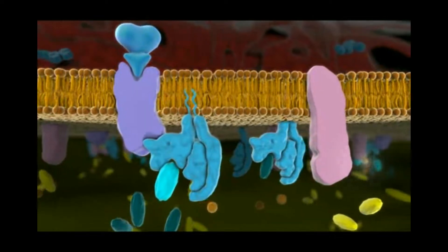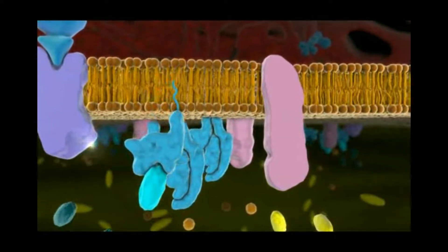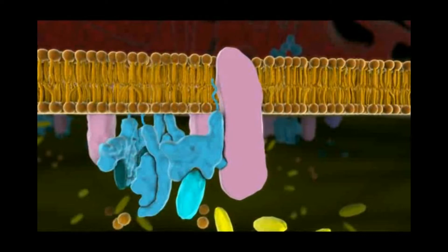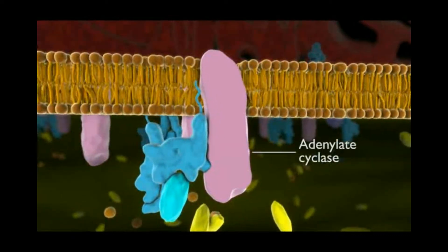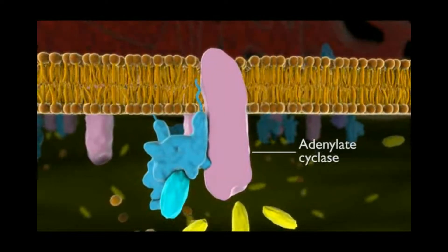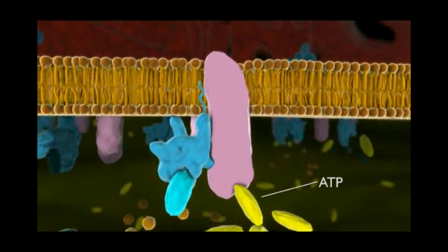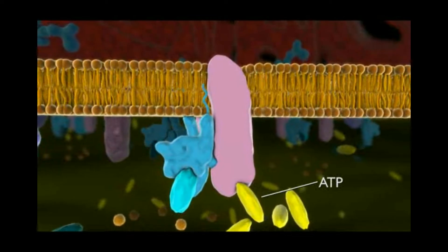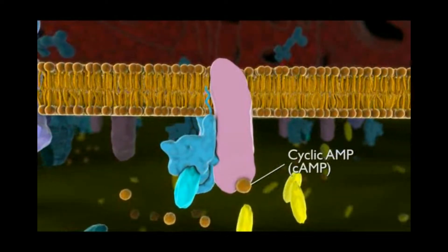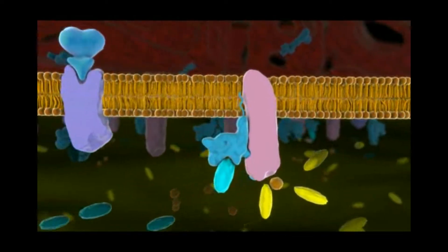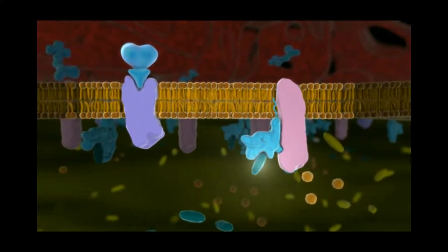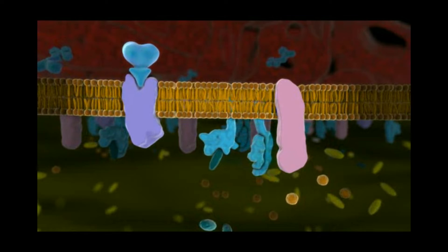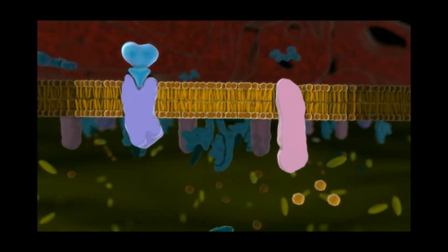An activated G protein diffuses along the plasma membrane until it binds to and activates the enzyme adenylate cyclase. Once active, adenylate cyclase converts ATP to the second messenger, cyclic AMP. These many molecules of cyclic AMP from each activated cyclase enzyme represent a further amplification of the initial hormone signal.